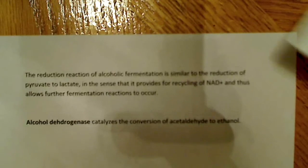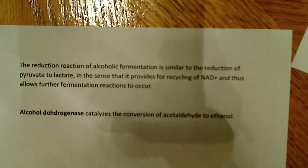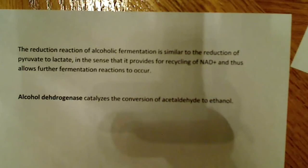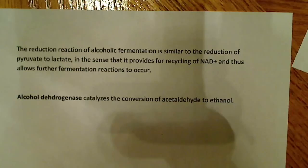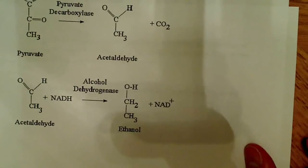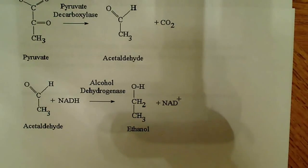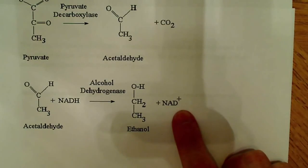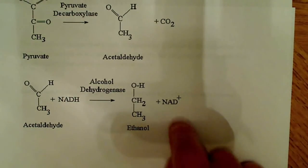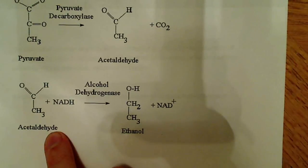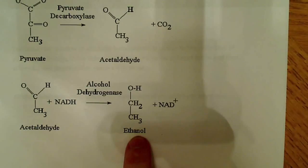The reduction reaction in alcoholic fermentation is very similar to the reduction of pyruvate to lactate, in that it also provides for recycling of NAD+. The enzyme alcohol dehydrogenase converts acetaldehyde to ethanol — ethanol being a two-carbon molecule with a hydroxyl group. NADH is oxidized back to NAD+, and acetaldehyde is reduced to ethanol. That's about all for this video.